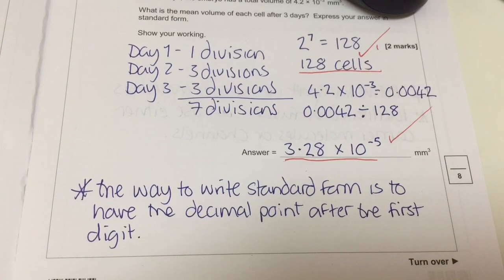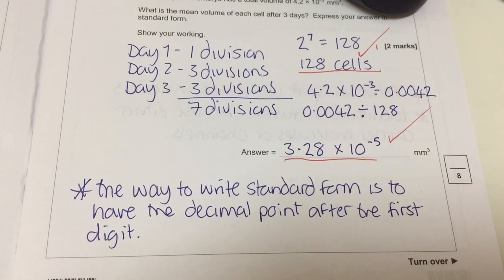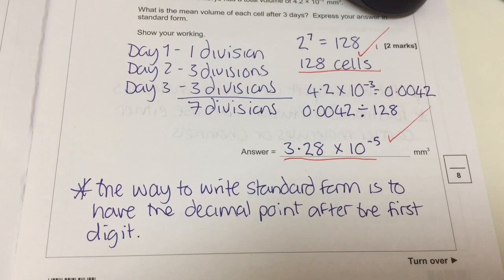My top tip for this question is about how to write standard form correctly: the decimal point must come after the first digit, so the first number will always be between 1 and 10. I hope this video has been of use to you — don't be shy to leave me a comment.